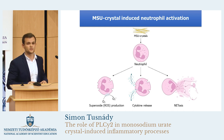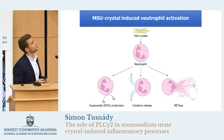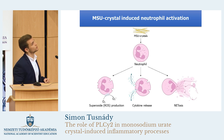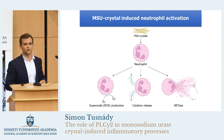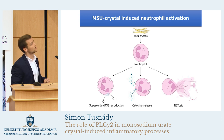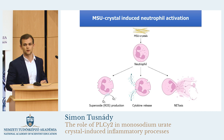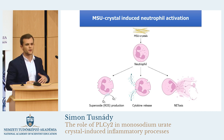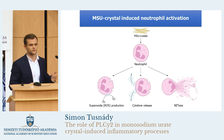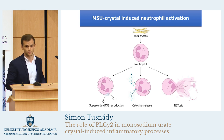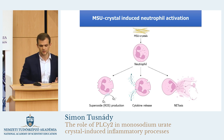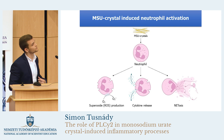Uric crystals activate the cells of the innate immune system, mainly the neutrophils. Neutrophils are phagocytes and known to be the most abundant immune cells in our body. The uric crystals induce many specific effector responses of the neutrophils, and from these, I would like to emphasize three important mechanisms.